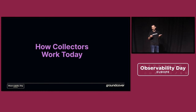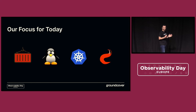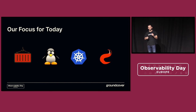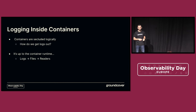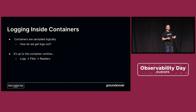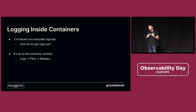We have to start with how things work today. We'll limit our discussion to containers on Linux — specifically Kubernetes — and specifically tailers: programs that continuously fetch logs from all your containers. Containers are secluded, right? There are Linux namespaces; you can't see what's going on inside a container. But luckily, the container runtimes, which actually manage those containers, handle that for us.